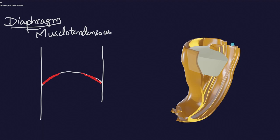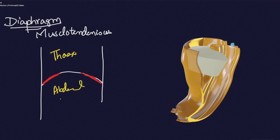The diaphragm is the most important muscle of respiration, and it basically separates the thoracic cavity from the abdominal cavity. Here is the thorax, and here is the abdominal cavity — or you can say the peritoneal cavity. This musculotendinous dome-shaped structure, which is an important muscle of respiration, separates the thorax from the abdominal cavity.